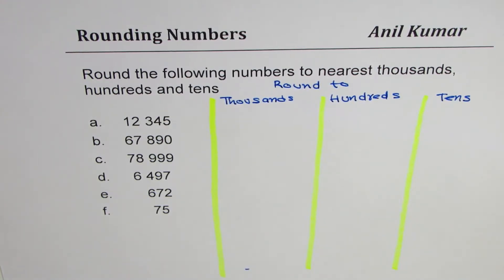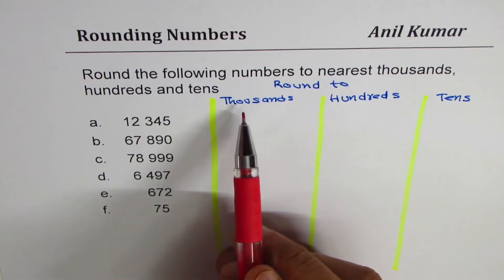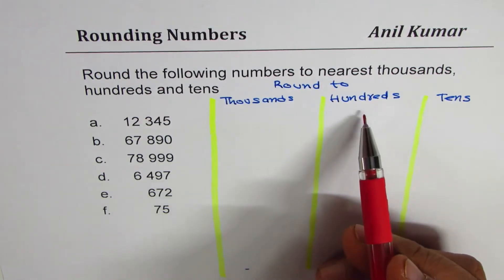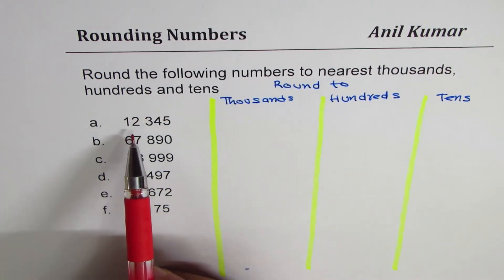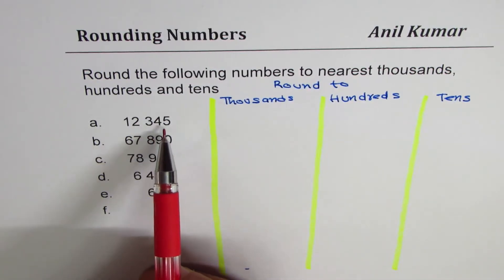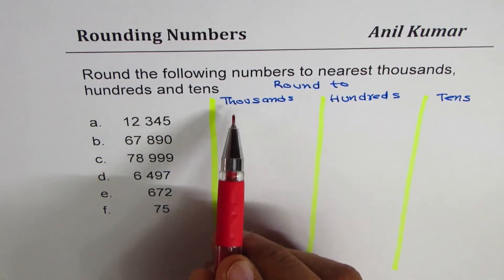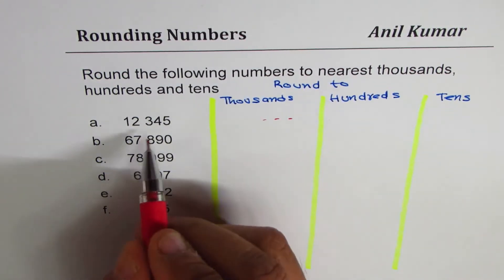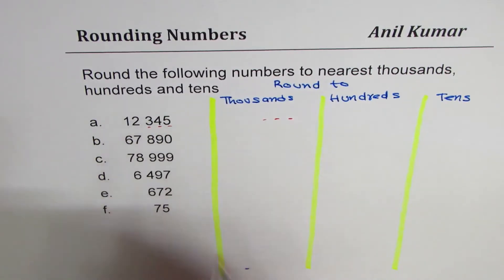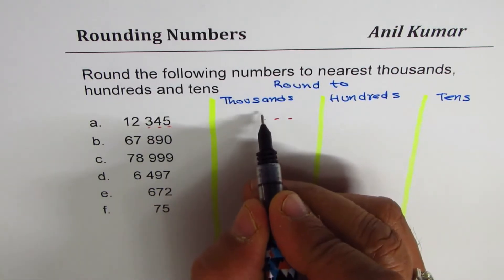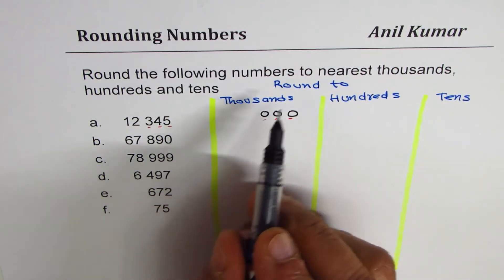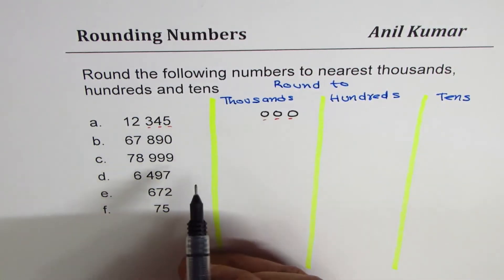Now, first let's understand what we mean by rounding to the nearest thousands. We will start with rounding to nearest thousands first, then move on to hundreds and tens. When we say round to thousands, that means we are looking for a number with three zeros — so just write three zeros. Any number you now write has been rounded to thousands.